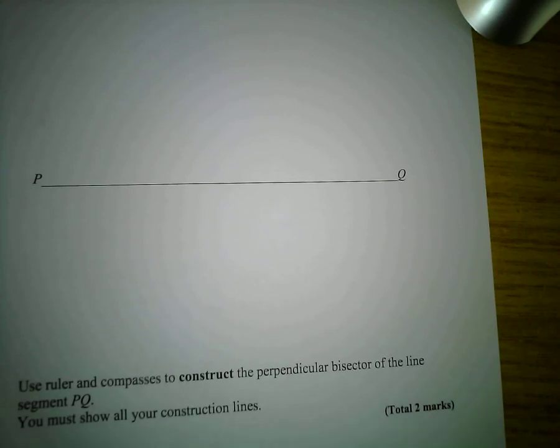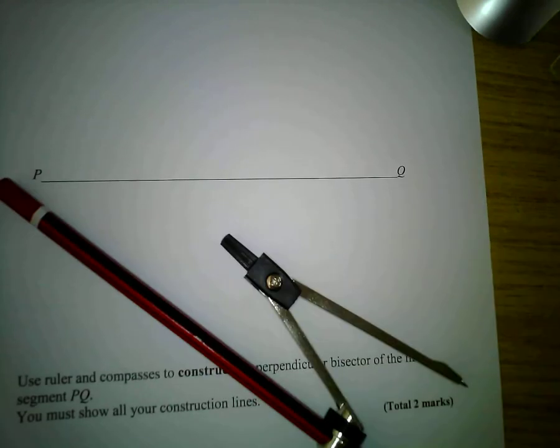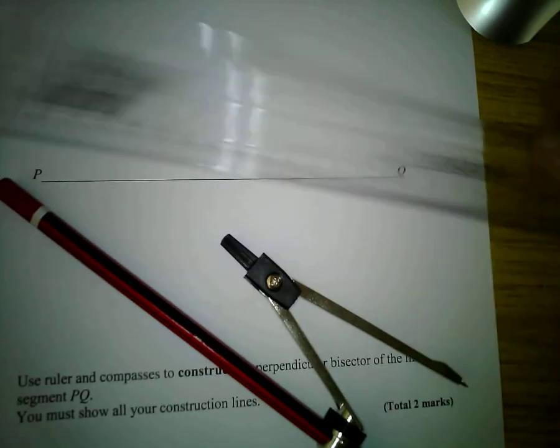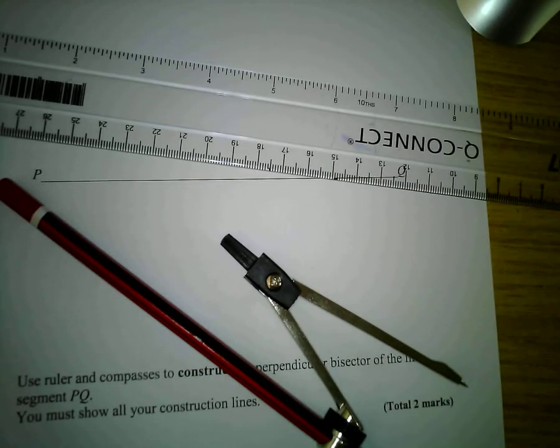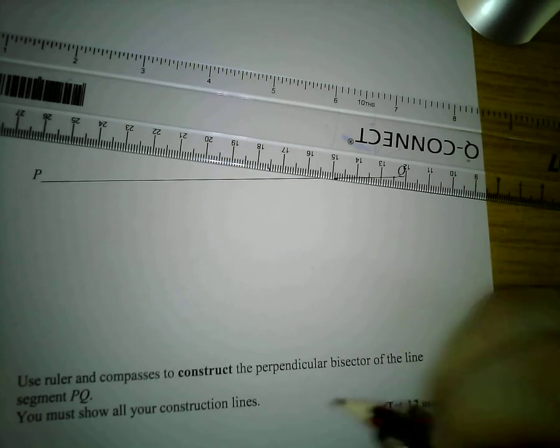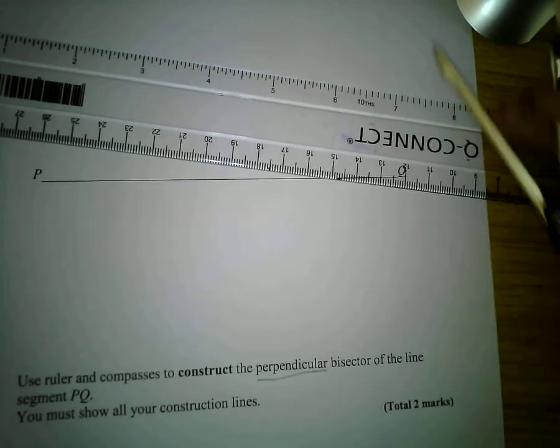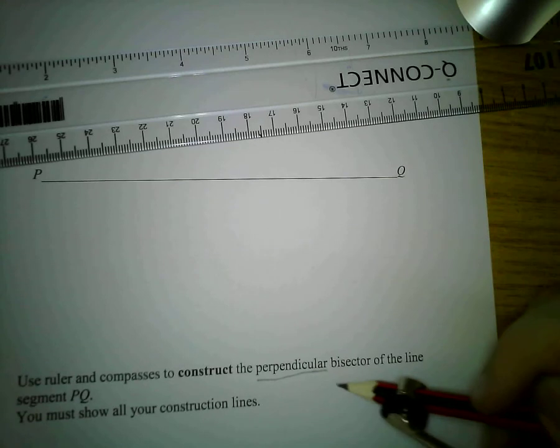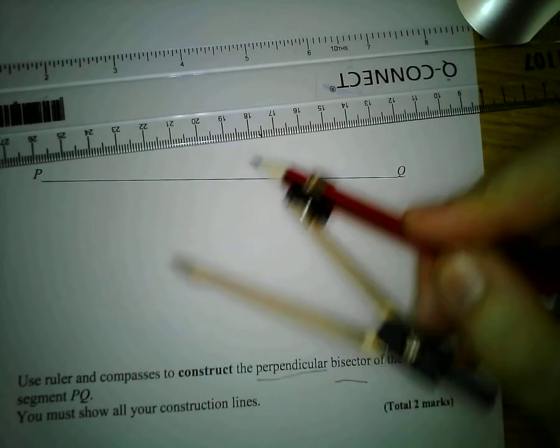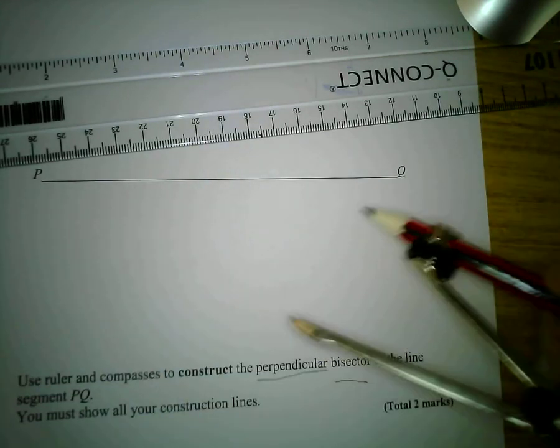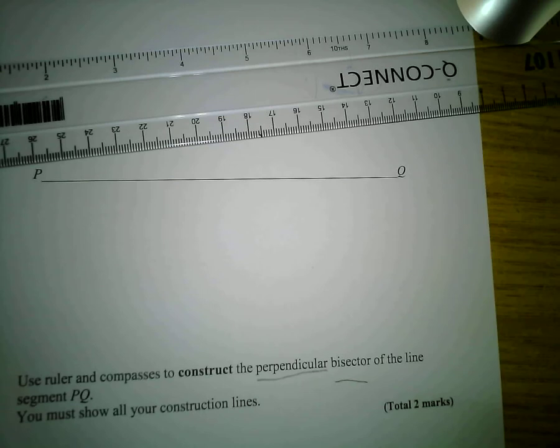When you're doing constructions, the tools you use are a pair of compasses and a ruler. Now just to explain what a perpendicular bisector is. Perpendicular means right angles and bisector means split it into two. So what we're going to do is split this line into two equal halves at right angles and we're going to construct it using these tools.